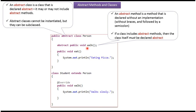The walk method is an abstract method because it does not have any implementation, so it is declared with the abstract keyword. If a class includes an abstract method, then the class must also be declared as an abstract class.